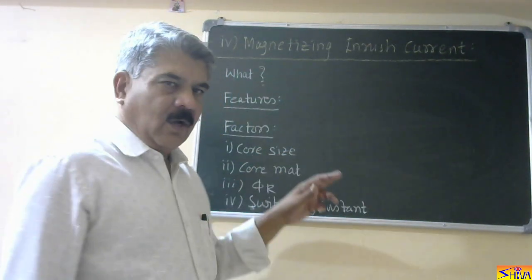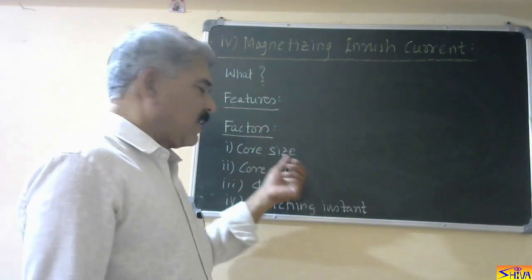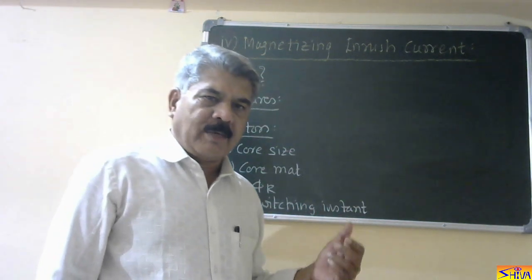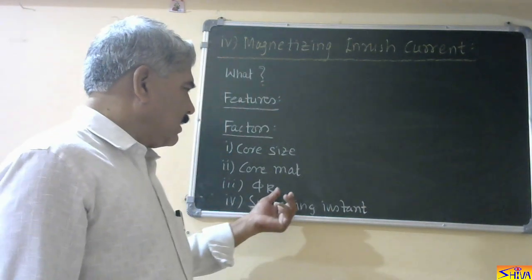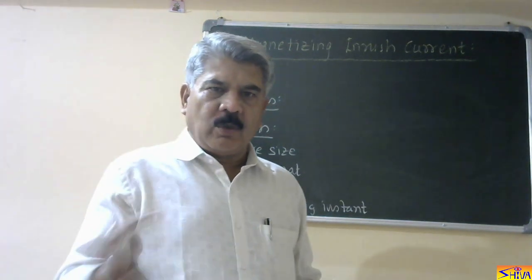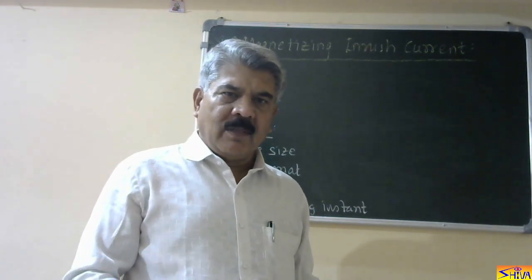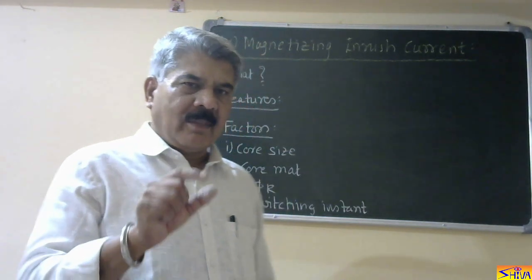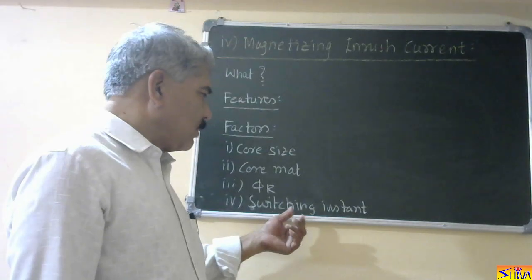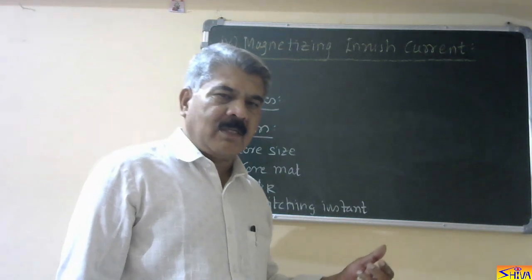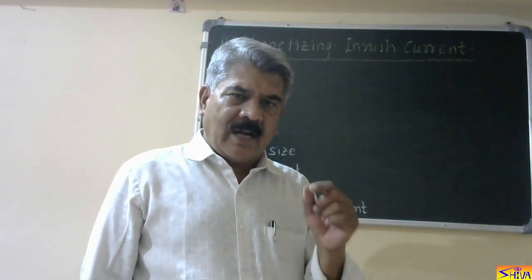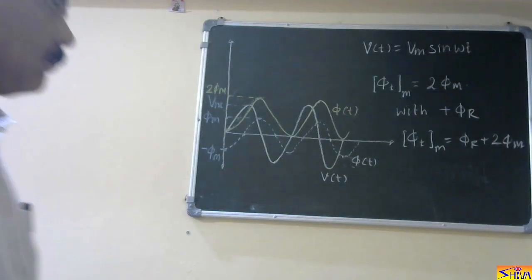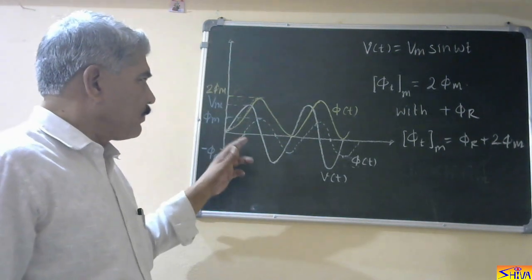The factors on which magnetizing inrush current depends are: first, core size — the larger the core, the more the magnetizing inrush current; second, core material, specifically the permeability of the core material; third, residual flux φr — if the transformer is switched off and immediately switched in again at no load, some flux remains in the core as residual flux; and fourth, the most important factor is the switching instant, which is the instant on the voltage wave at which the transformer is connected, and this is not in our control.